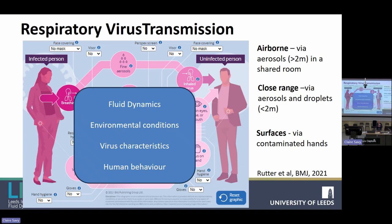Ultimately there are a number of factors affecting transmission and fluid dynamics plays out throughout the whole system — from how droplets and aerosols are generated within the human respiratory system, to how they're released and where they go in the environment. Environmental conditions play a big part: temperature, humidity, UV light. Virus characteristics matter too — different viruses survive in the environment in different ways, some are more robust and others will die very quickly.